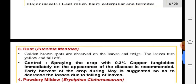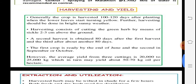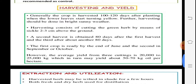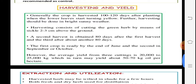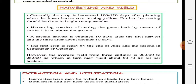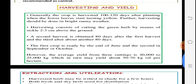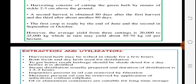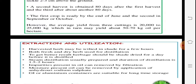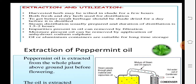Harvesting involves removal of the leafy plant part. The crop is ready for cutting 101–120 days (about three months) after planting, before the leaves start yellowing. Harvesting consists of cutting the green herb 2–3 cm above the ground, and it is directly sent to market. Yield is about 20,000–25,000 kg per hectare of fresh herb, and 50–70 kg of oil per hectare.